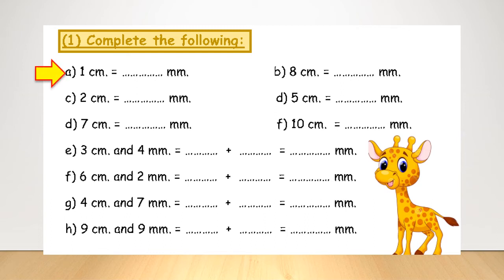Number one, complete the following. A, 1 centimeter equals how many millimeters? Centimeter to millimeters means 10. Letter B, 8 centimeters. How many millimeters? It will be 80. Letter D, 7 centimeters. How many millimeters? 7 times 10 equals 70 millimeters. Letter F, 10 centimeters. How many millimeters? 100 millimeters.